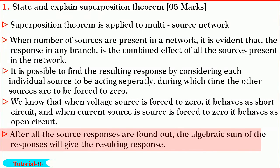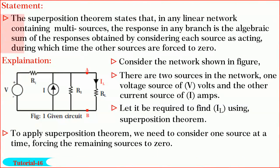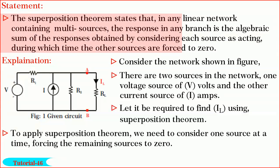After all the source responses are found out, the algebraic sum of all the responses will give the resulting response. The superposition theorem states that in any linear network containing multi-sources, the response in any branch is the algebraic sum of all the responses obtained by considering each source as acting separately, during which time the other sources are forced to zero.